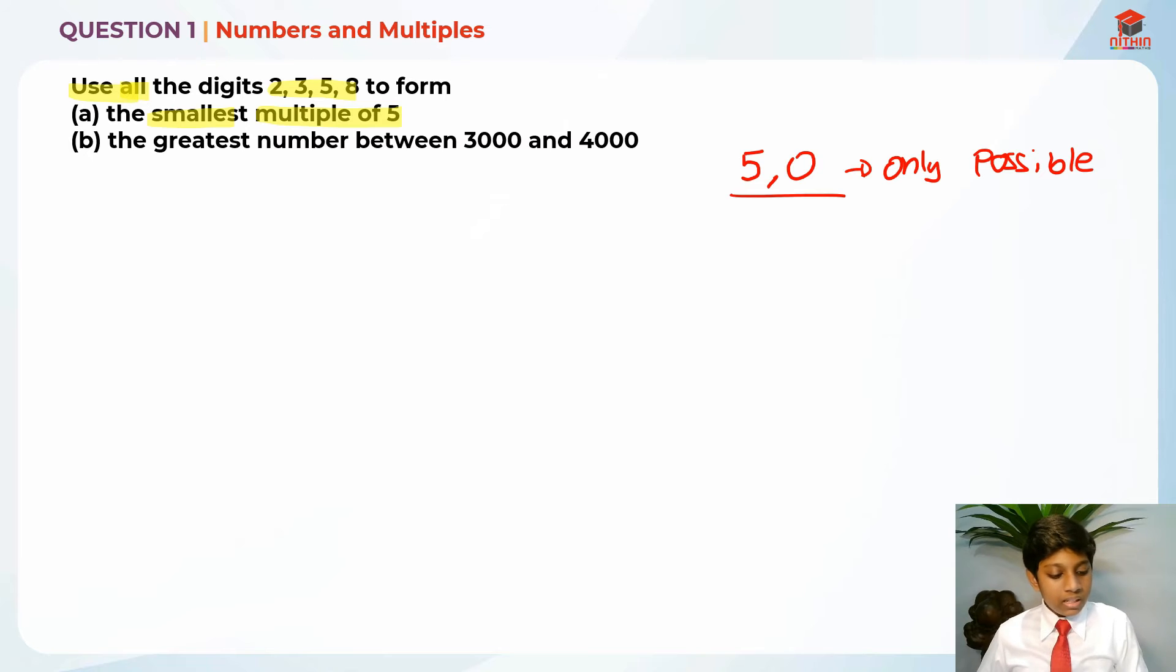So in this number, there's only 5, right? So in order to form the smallest number, we are first going to use these 3 digits: 2, 3 and 8.